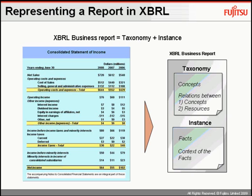On the other hand, the instance document — the one being submitted to the SEC — has company-specific data relating to the concepts in the taxonomy. In this case, the value of the sales or the SG&A are considered facts and go in the instance document. Other information that offers context to these facts, such as the period for which the facts apply, is also found in this instance document.